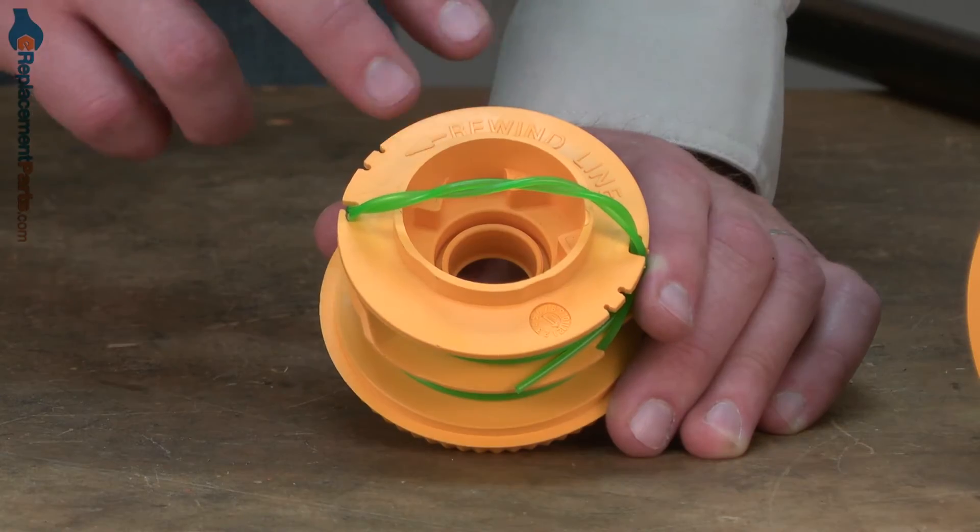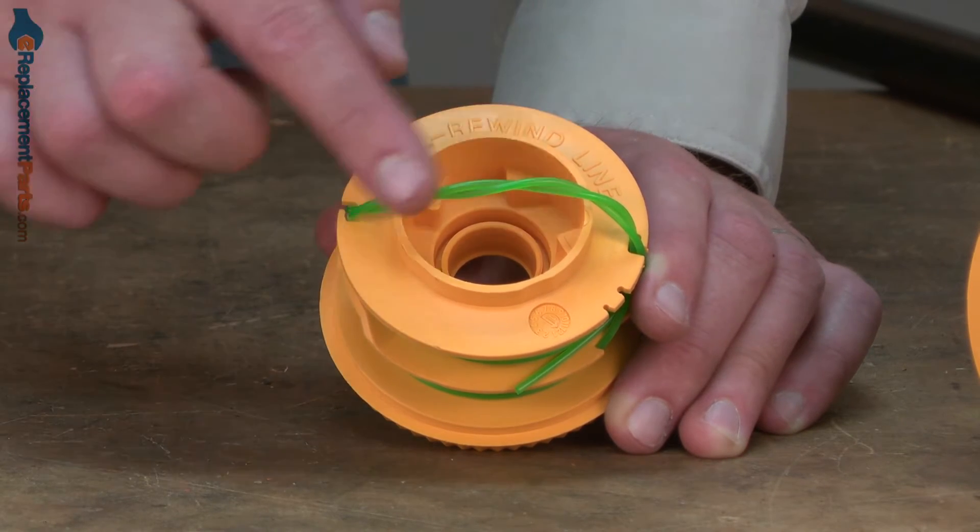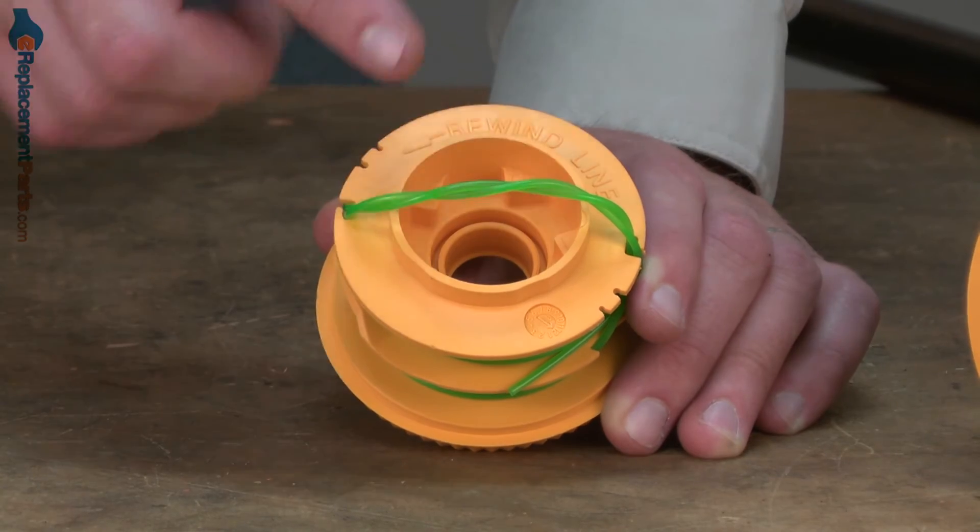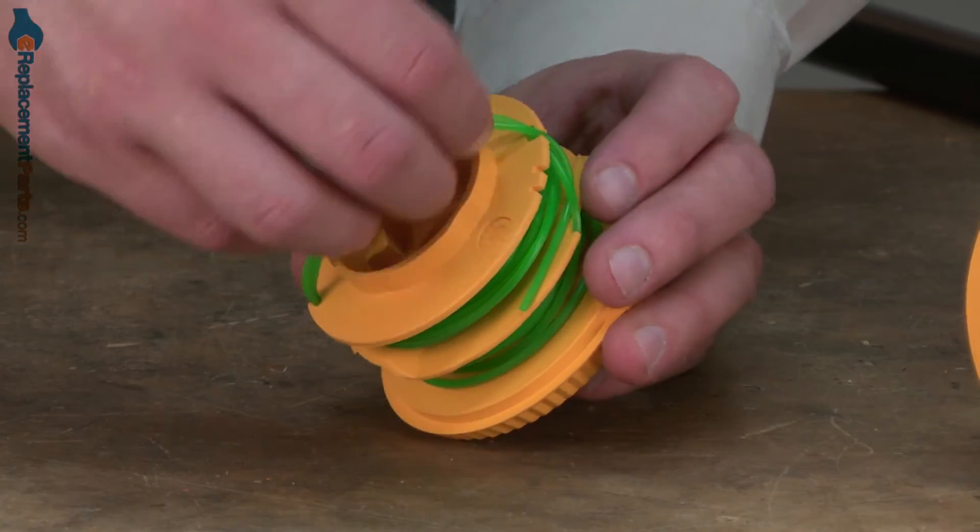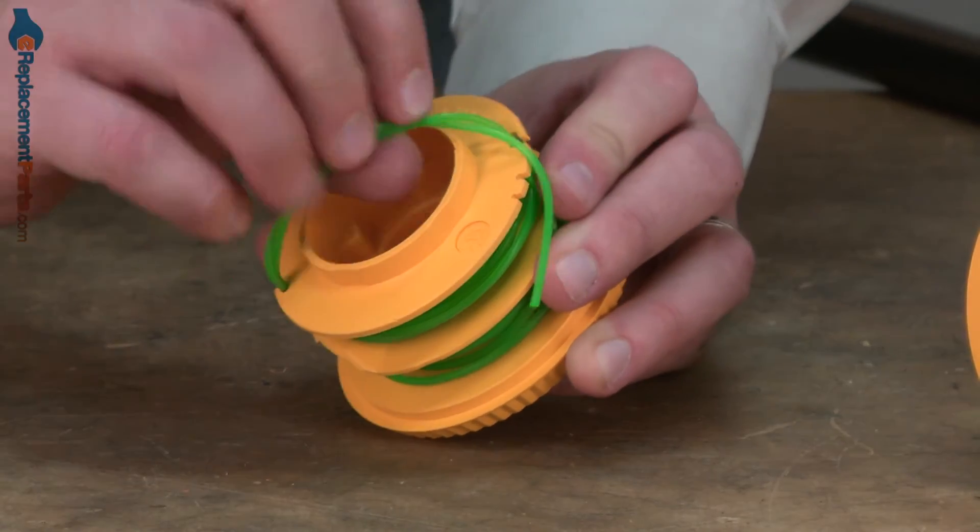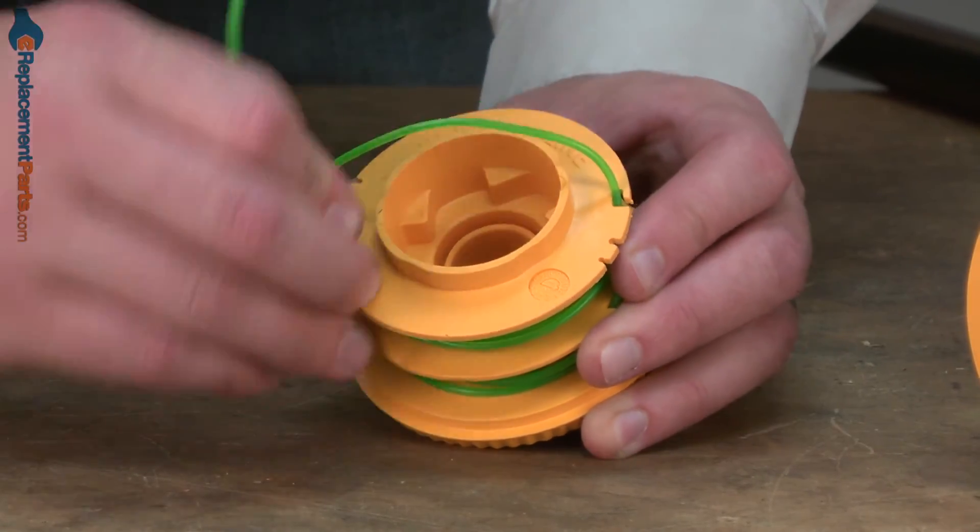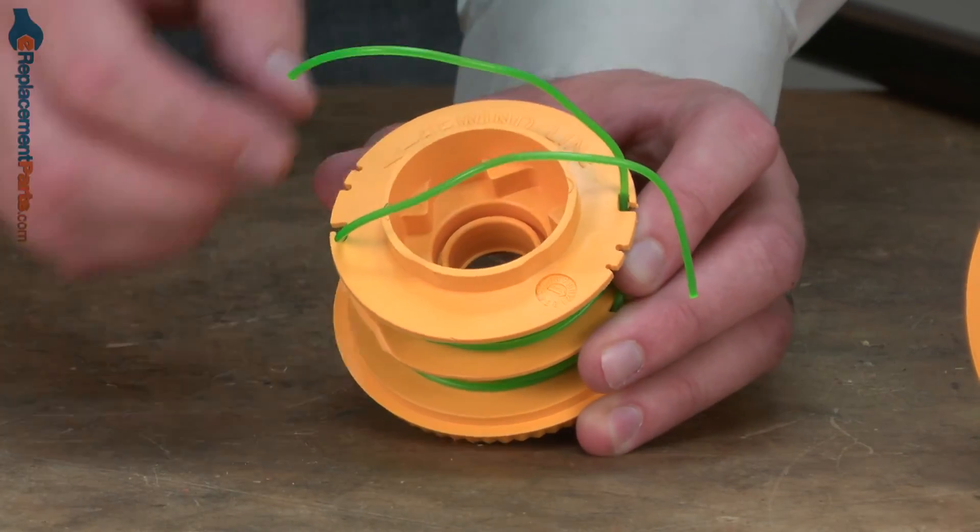Now I'll install the spool. The spool comes pre-packaged with trimmer line already on it and often the two lines are twisted together. This is just for shipping. So what I want to do is pull the lines away from each other so I have them extending out both sides of the trimmer head.